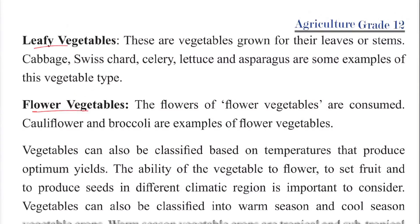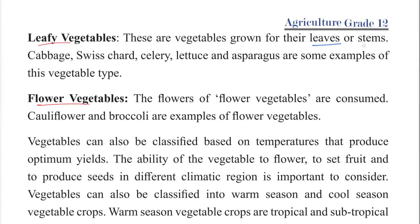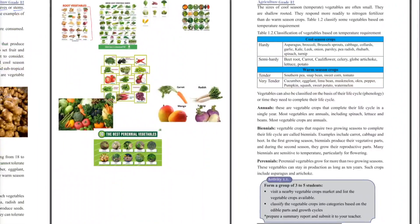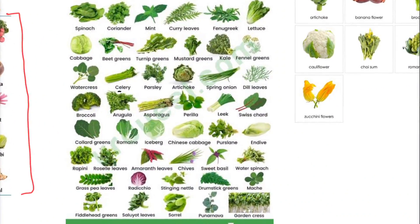Leafy and stem vegetables are grown for their leaves or stems. Examples include Swiss chard, celery, asparagus, spinach, cabbage, and broccoli.